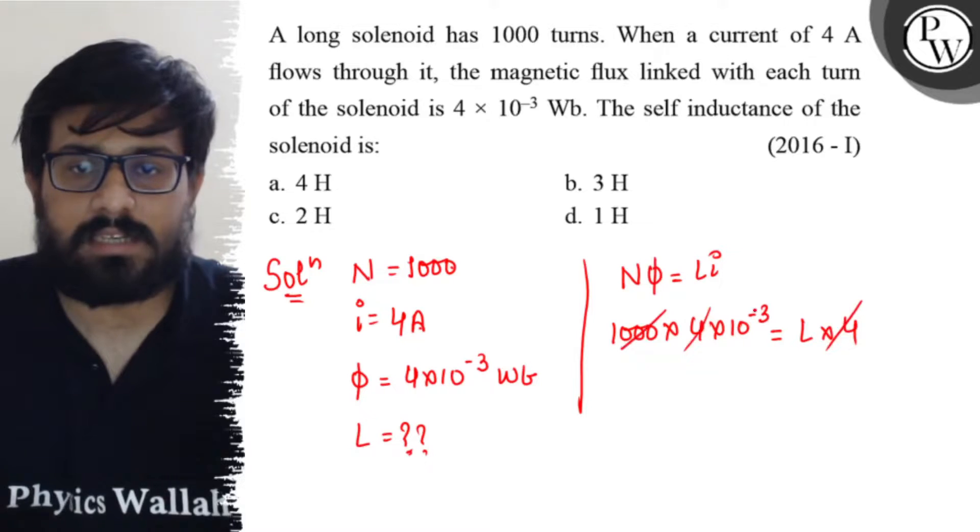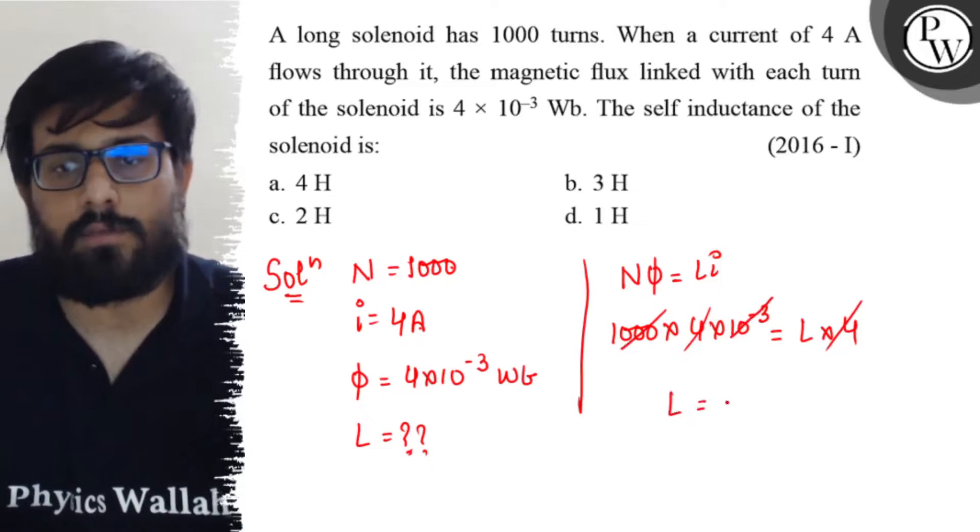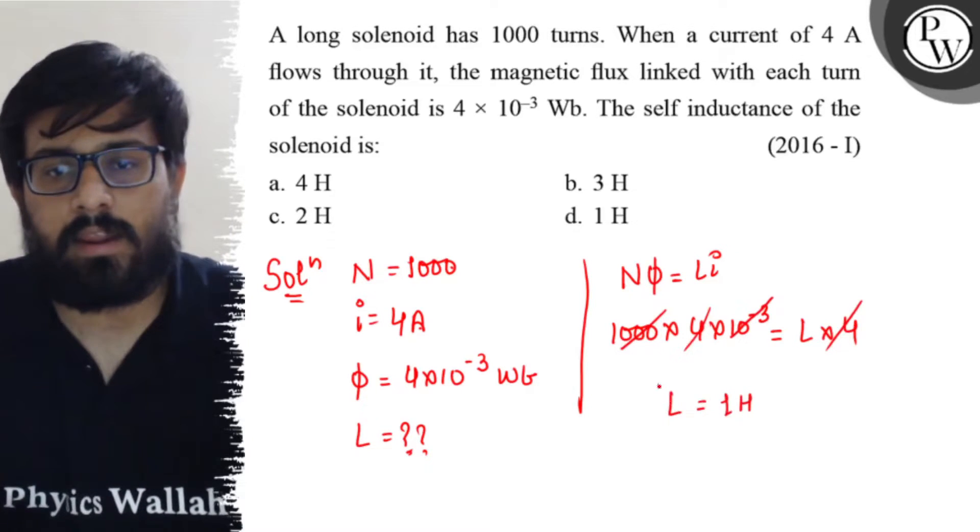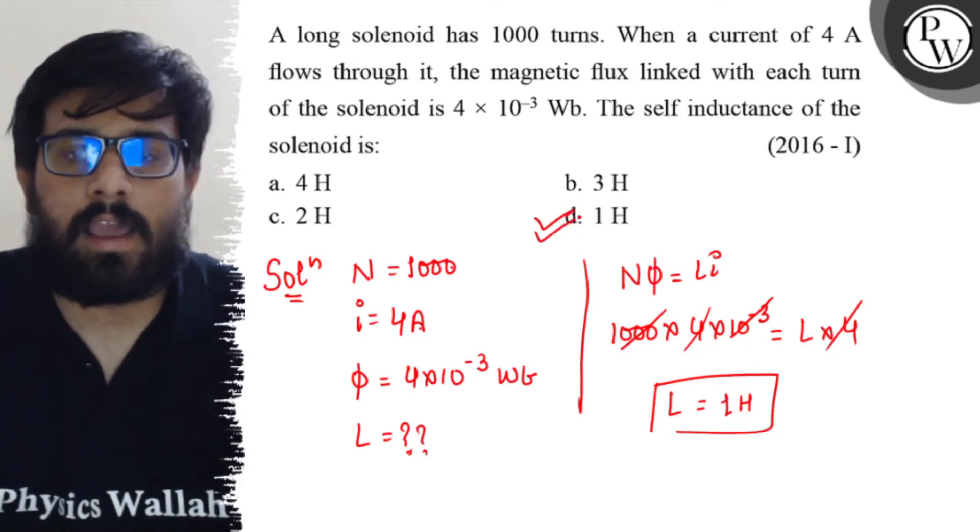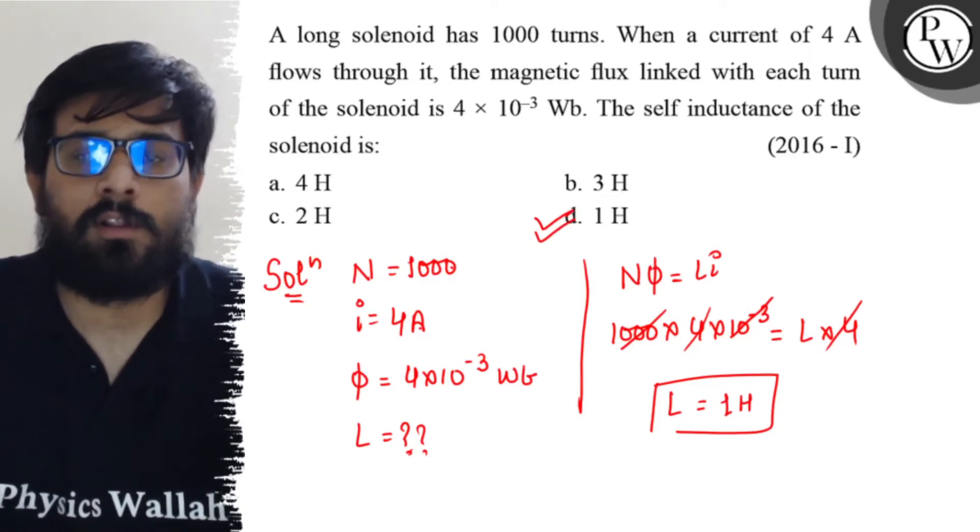10^-3 cancels out, and the value of L comes out to be 1 henry. So your option D is absolutely correct. I hope you got the concept of this question. All the best!